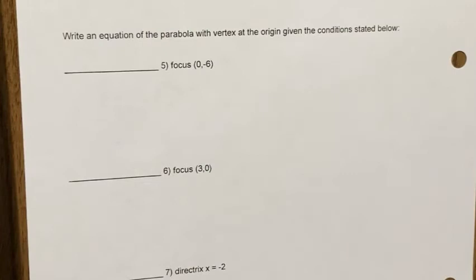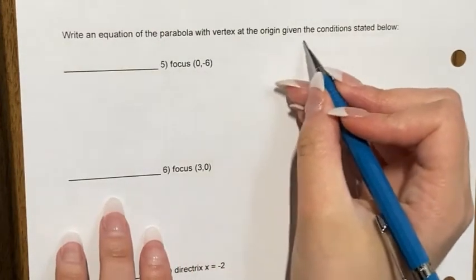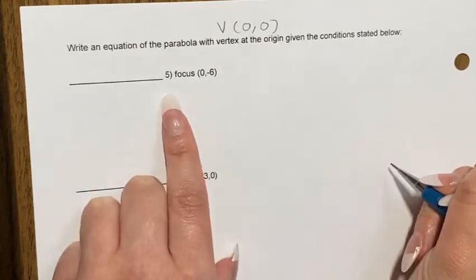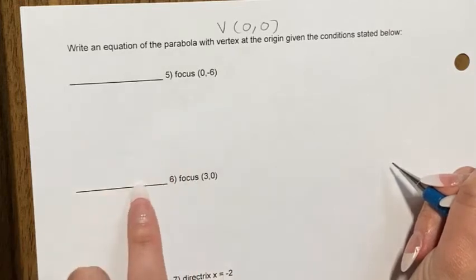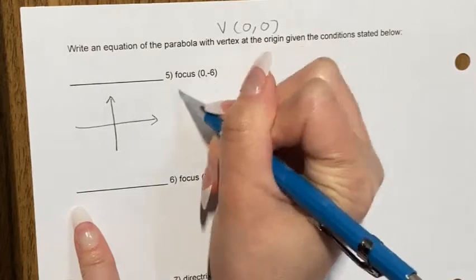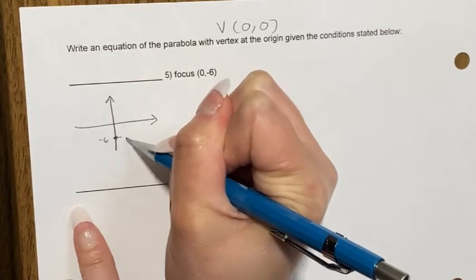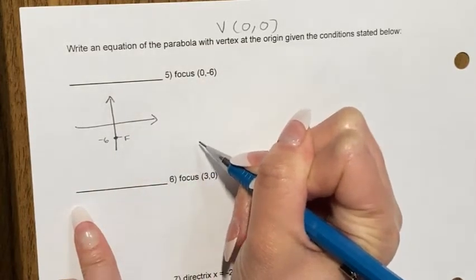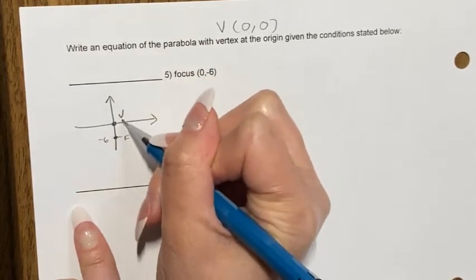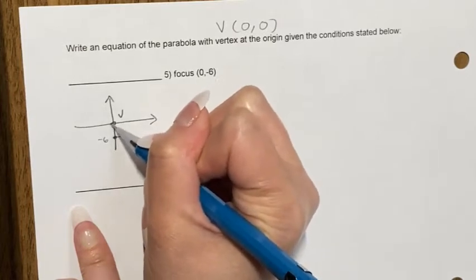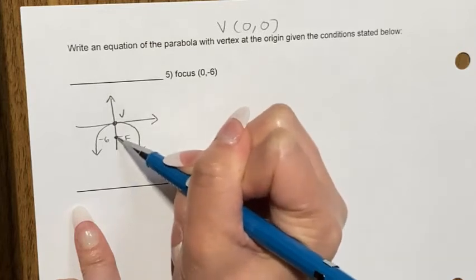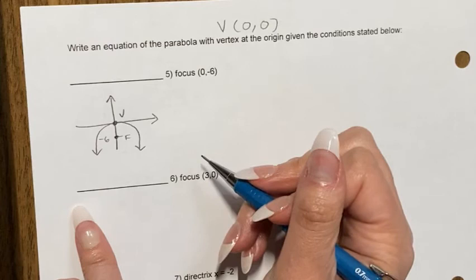Example 5: vertex at origin, focus at (0, −6). Plot the focus at (0, −6) below the vertex at (0, 0). Since the focus is like the bulb inside a lamp, and it's below the vertex, the parabola opens downward — p < 0.